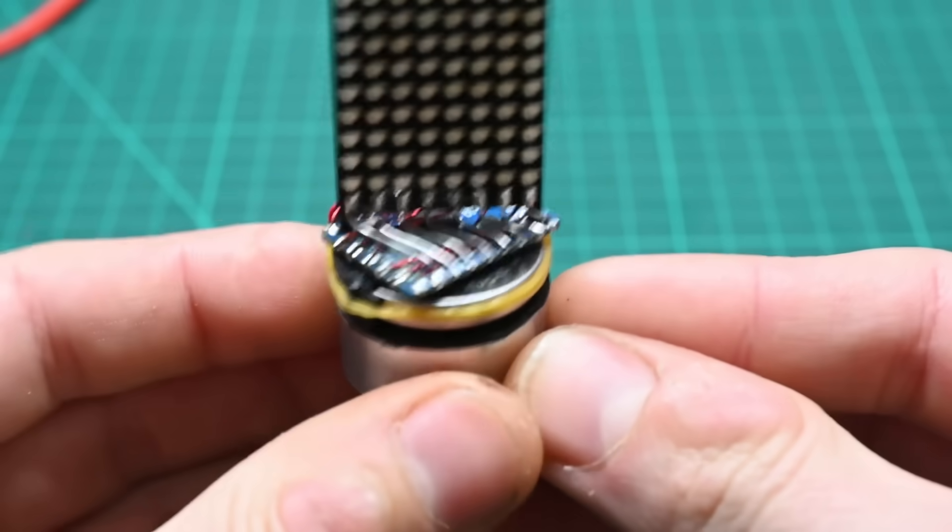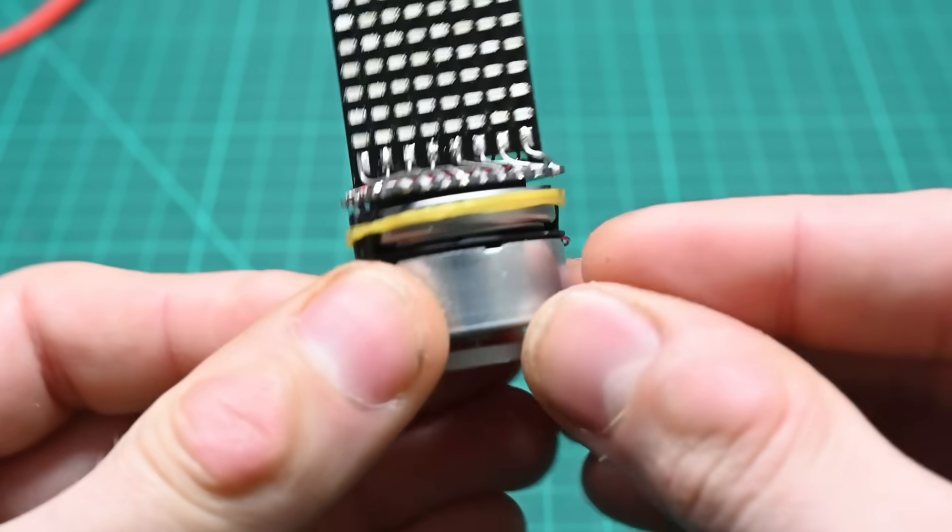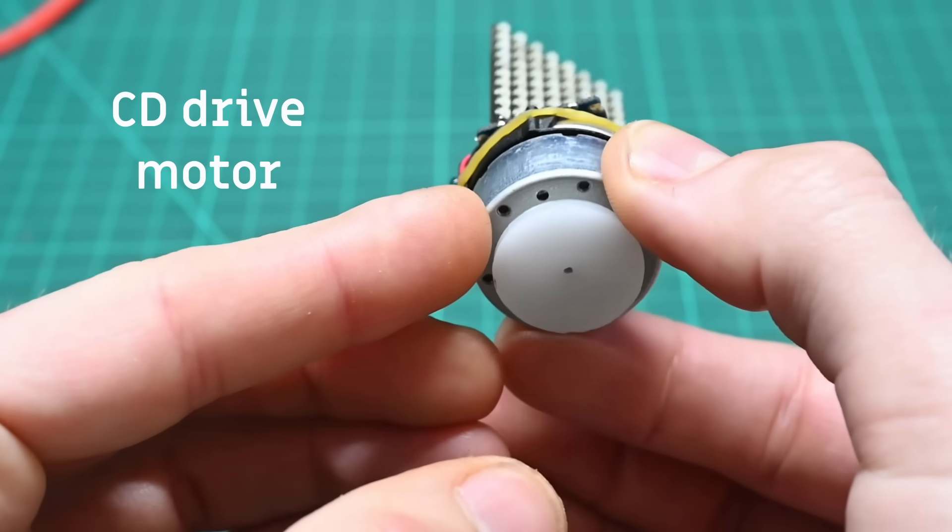IR sensor, a LUR2450 battery in the middle, and then the motor from a CD drive at the bottom.